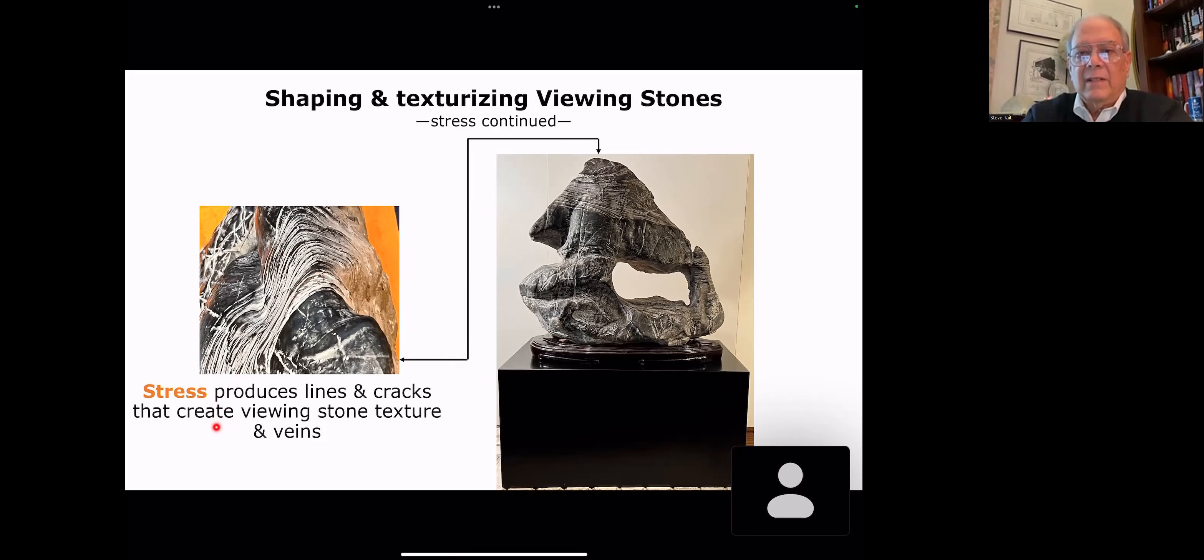These lines now are going to direct the flow of water and air over it to create further erosion and accentuate them. So stress produces these lines and cracks that create viewing stone texture and veins. When you have cracks, they can fill in with secondary materials. We were talking about that green schist earlier that had some calcite inclusions in it. Basically, stress probably cracked it, and then the calcite came along and filled it in.